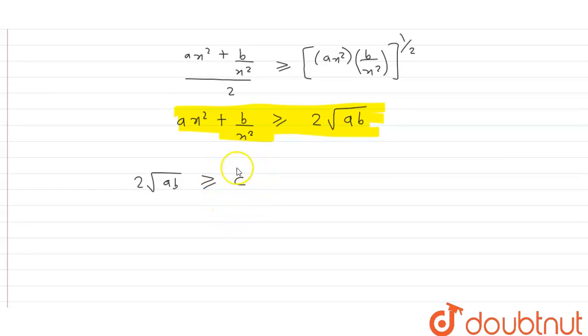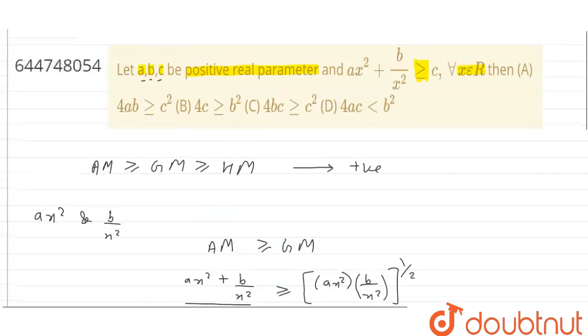So we can write 2√(ab) greater than or equals to c. So c is the least minimum value and we have 2√(ab). On squaring both the sides it becomes 4ab ≥ c², that is 4ab is greater than or equals to c². So according to the options, our option becomes 4ab ≥ c², that is option A.